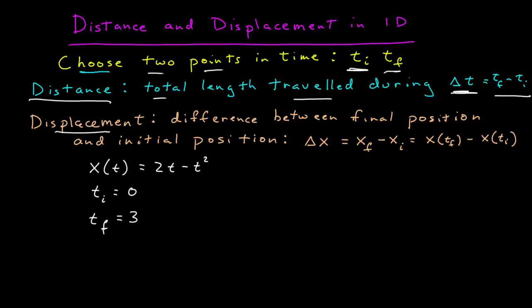The displacement is the difference between the final position and the initial position. I'd call that difference delta x, which is the final position x subscript f, minus the initial position x subscript i. These terms are defined to be the function evaluated at the final time minus the function evaluated at the initial time.